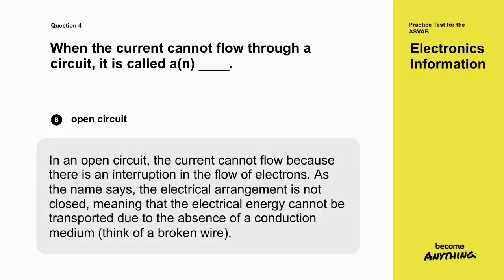In an open circuit, the current cannot flow because there is an interruption in the flow of electrons. As the name says, the electrical arrangement is not closed, meaning that the electrical energy cannot be transported due to the absence of a conduction medium, think of a broken wire.